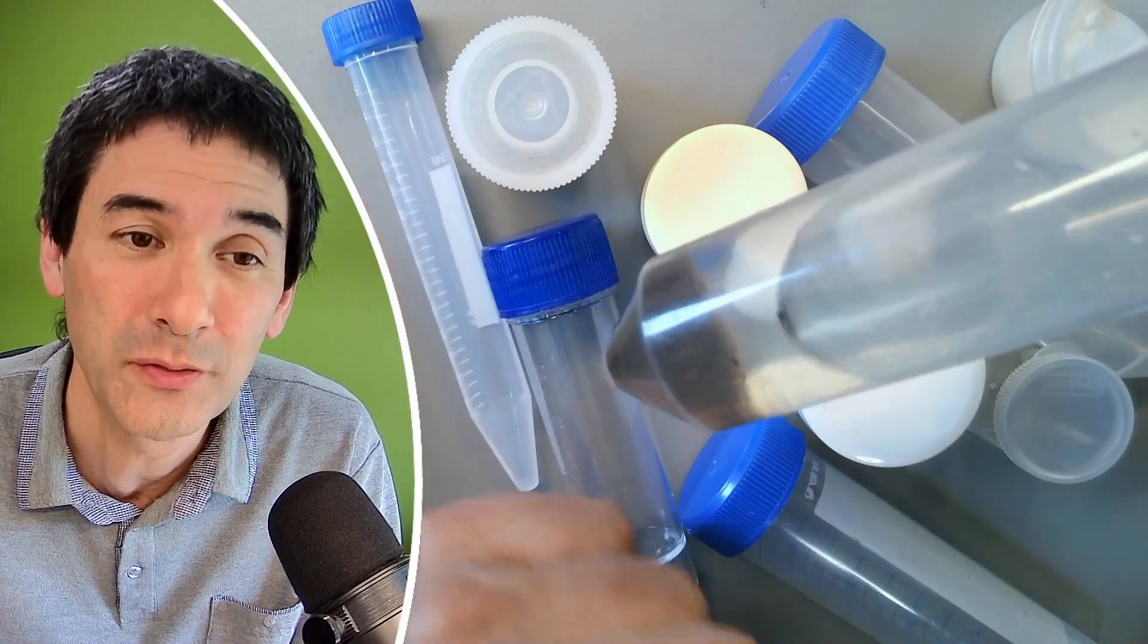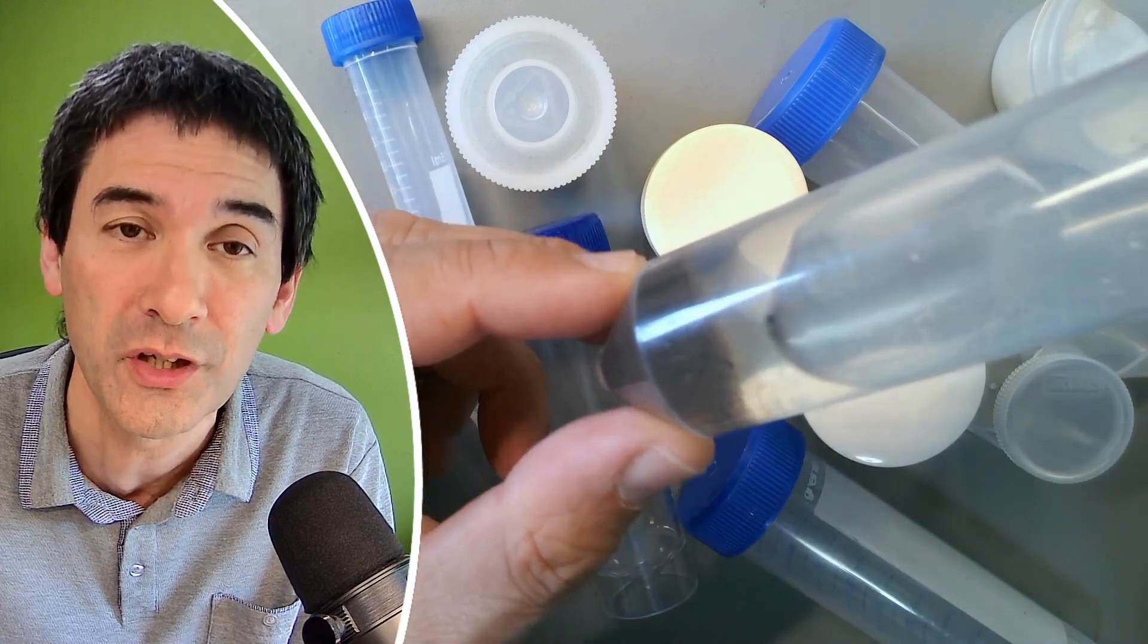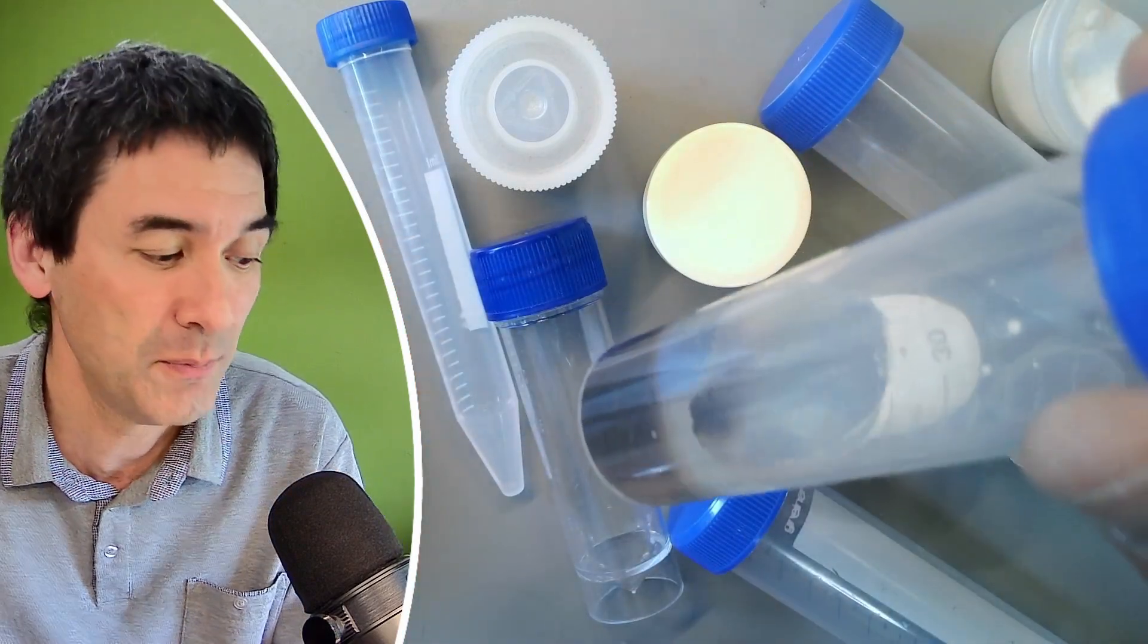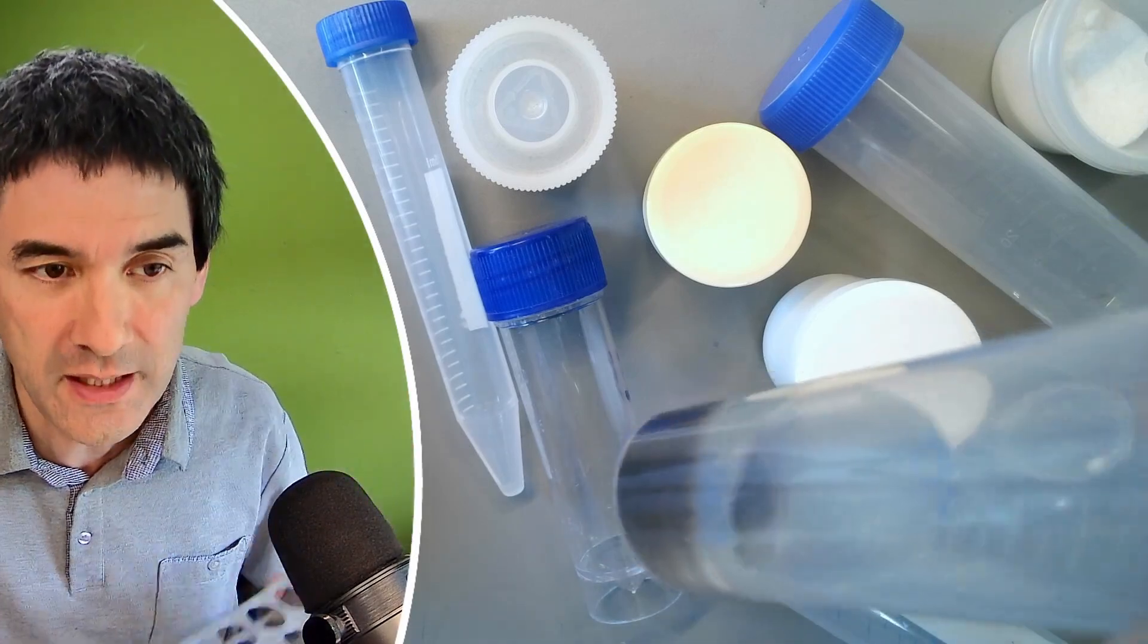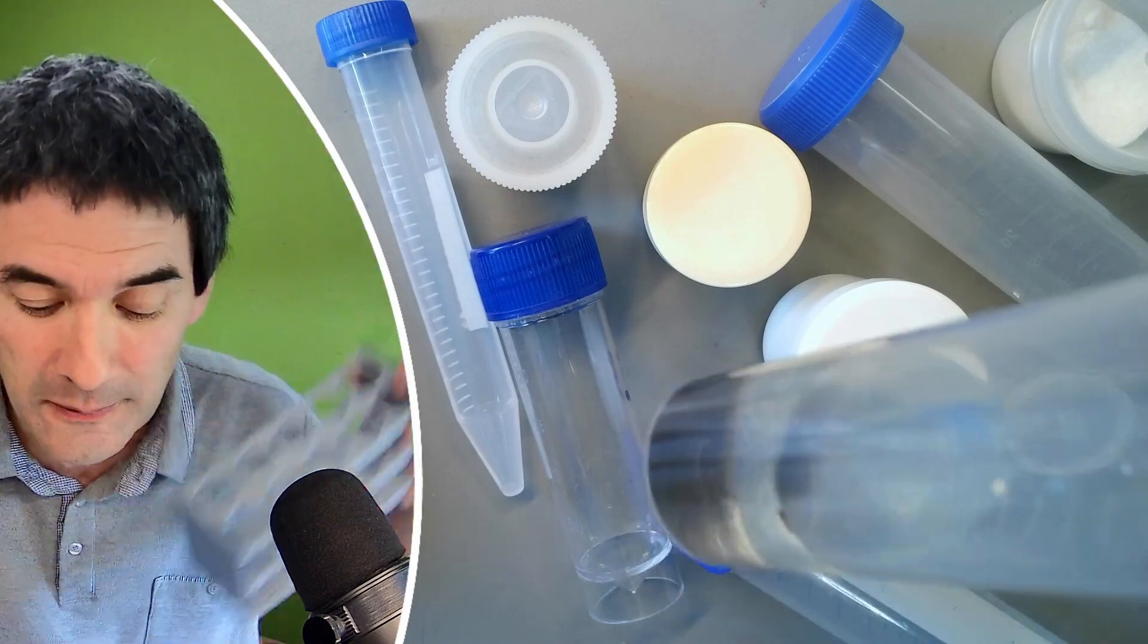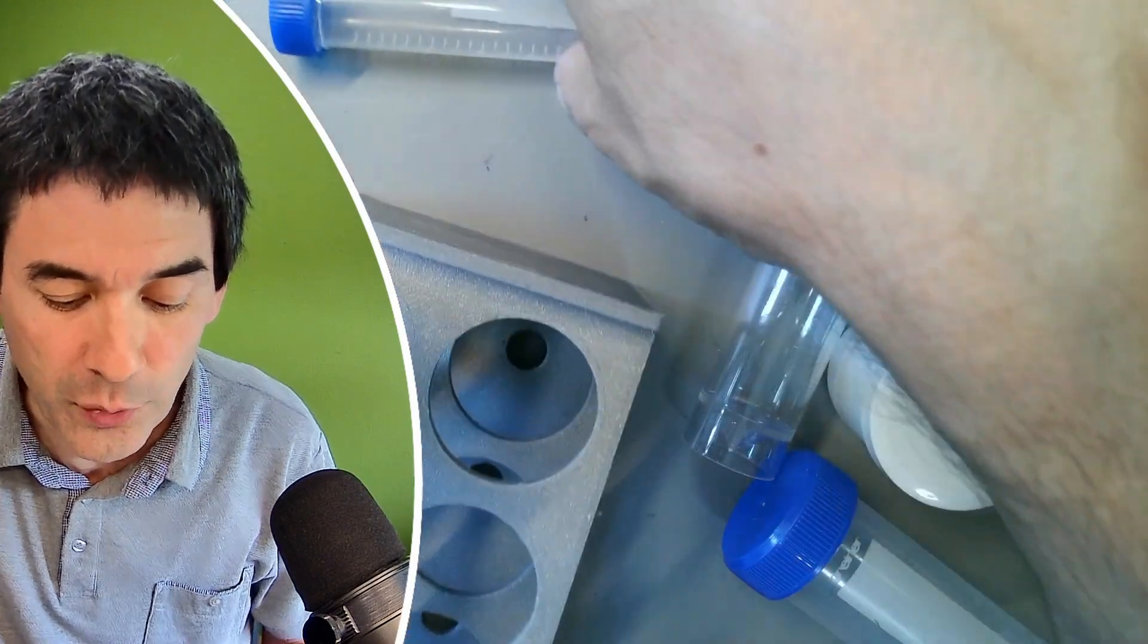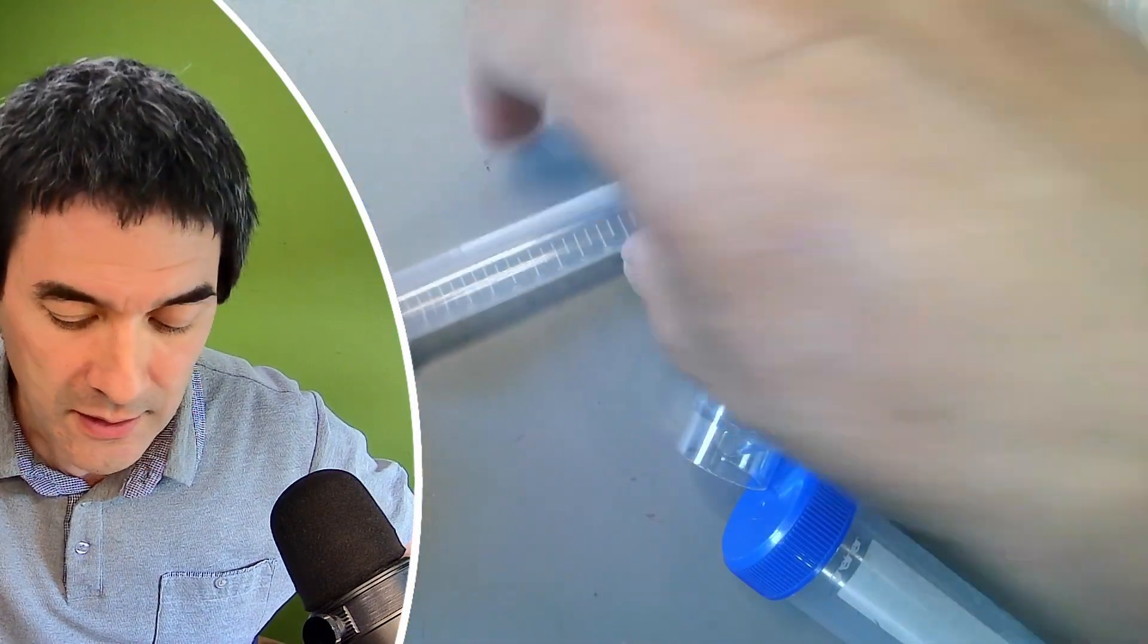Just by looking at it you're probably already going to see a major disadvantage and that is it's kind of conical over here so there is no possibility to actually stand it up here. So what I've made is the following I 3D printed myself a rack here where you can actually put in those tubes.